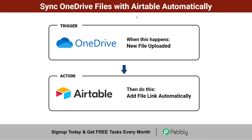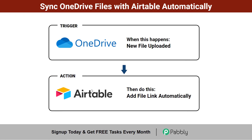How to sync OneDrive files with Airtable spreadsheets automatically. Every time you upload a new file into your OneDrive folder, the same file link will be added automatically into the Airtable spreadsheet. In this way you can keep a track record of all your OneDrive uploaded files in an organized way, and you do not have to share access of your OneDrive with your team. You can directly share the Airtable access with your team, and they can find all uploaded files from Airtable only.